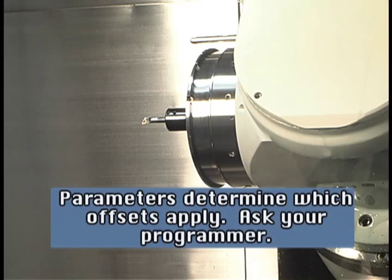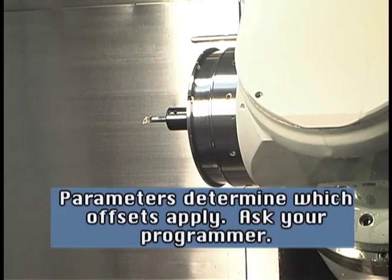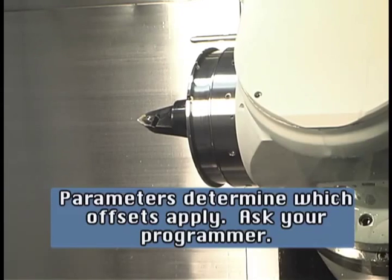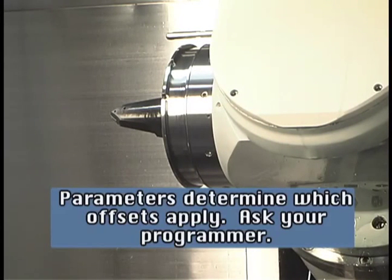There are parameters in the control that will determine which set of offsets will apply on your machine. If your shop often uses both MasaTroll and EIA programs, you will need to talk to your programmer to learn how your machine has been set in regard to offsets.